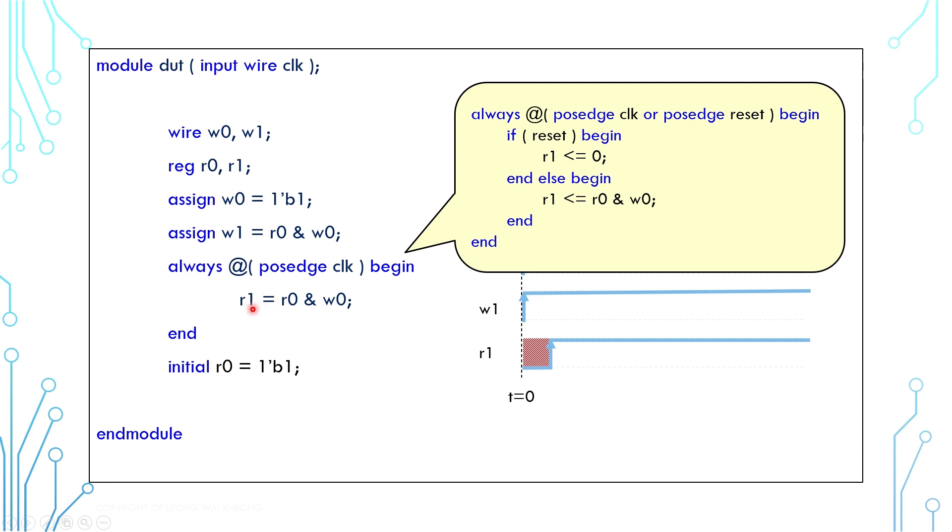Another thing is that the always block here uses blocking assignments instead of non-blocking. Non-blocking assignments is quite a huge topic by itself and therefore it is covered in another tutorial.